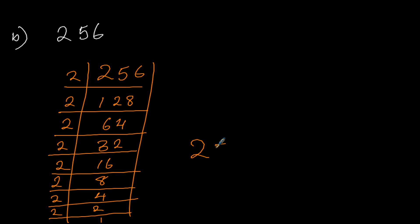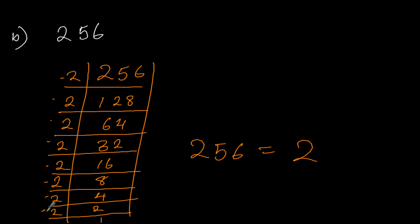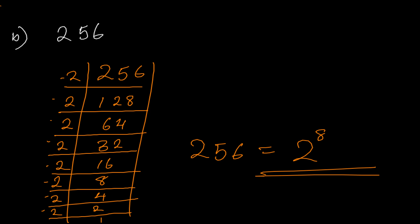So 256 is the same as 2 to the power of the number of times we divided: 1, 2, 3, 4, 5, 6, 7, 8. So 2 to the power of 8, and that's our answer.